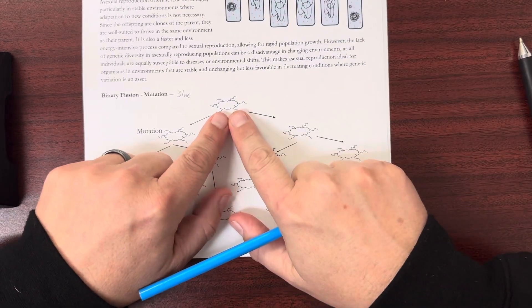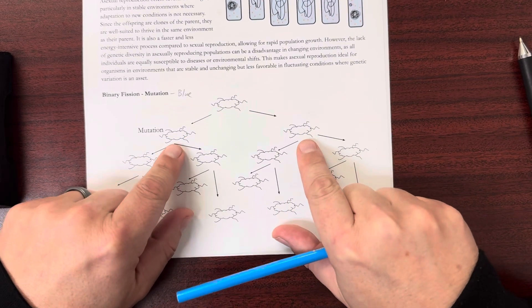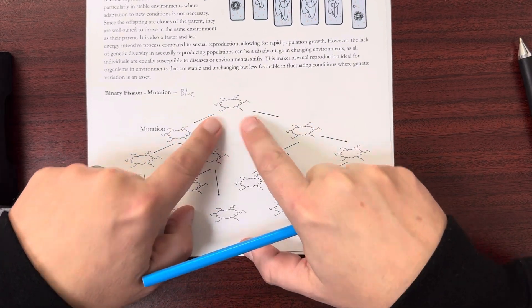Our bacteria is going to go through binary fission, where it makes replicas of itself, right? So here are the two new cells now. From the one, we got two.